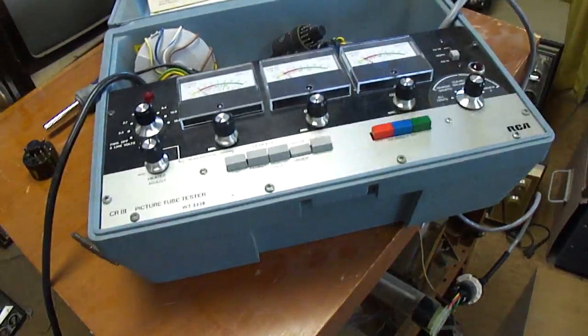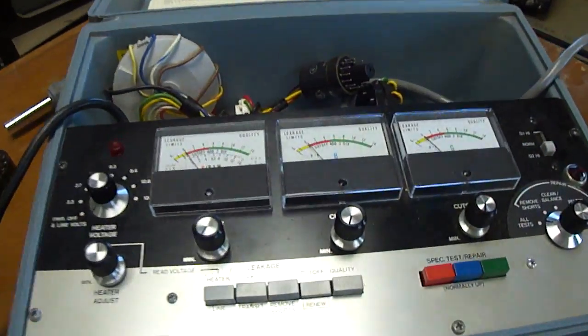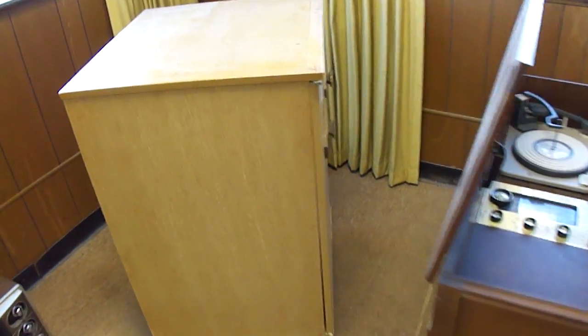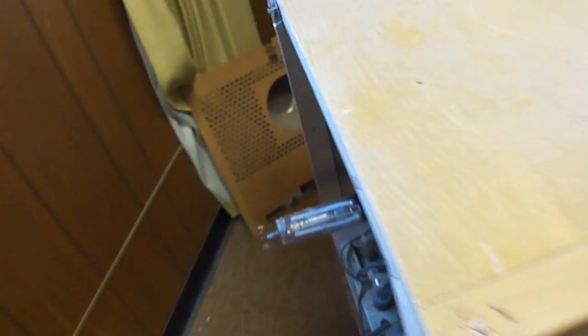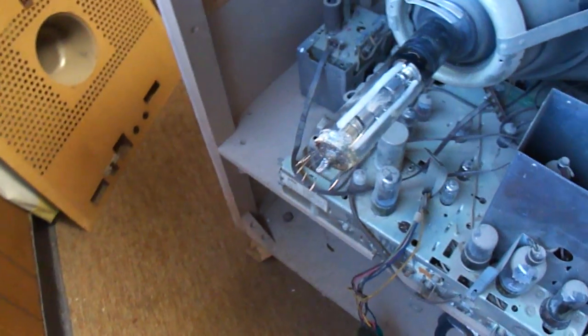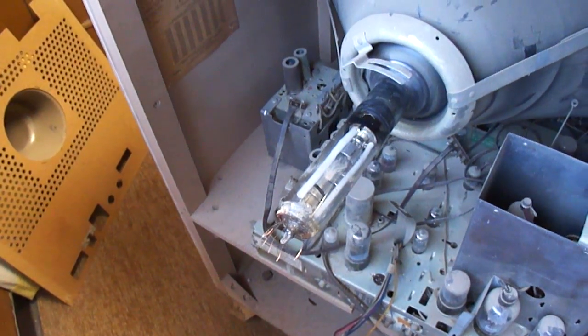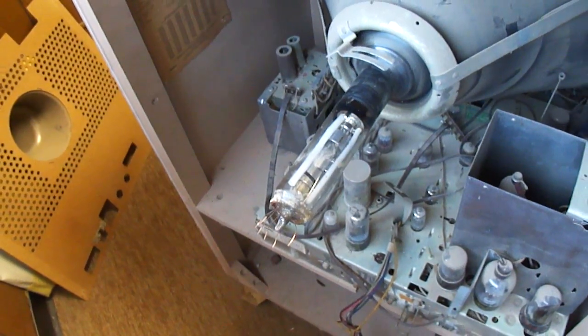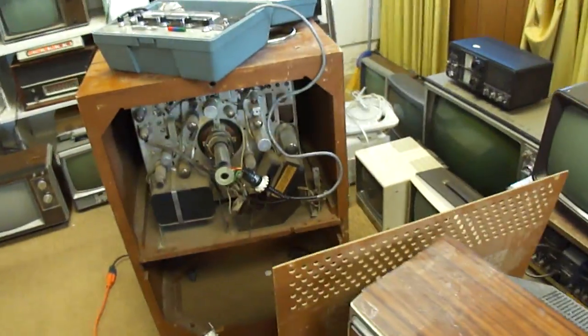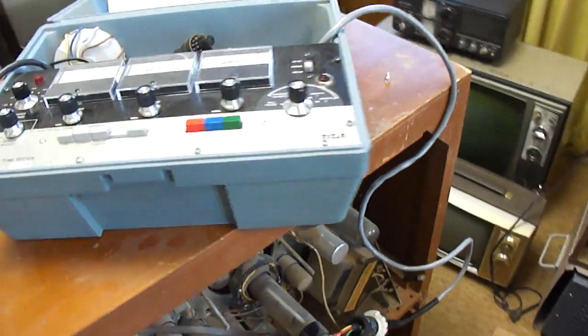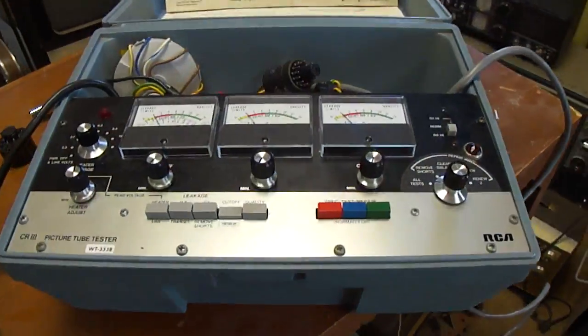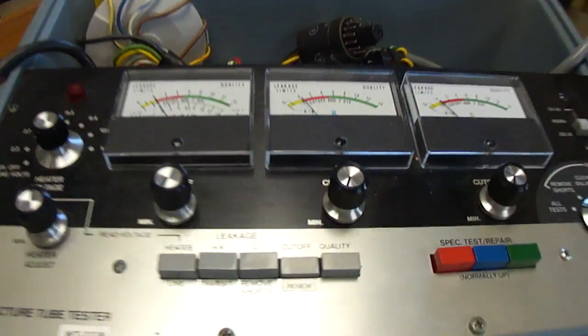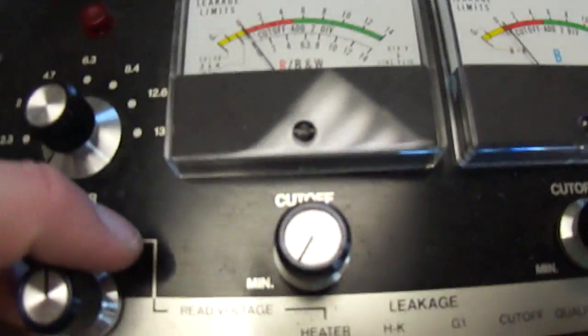What I wanted to do with this is to just double check my CRT tester. On this TV here, which is the Dumont, the CRT tested absolutely bad, 100% bad, no reading at all. And I thought that was kind of weird. So I thought I better double check my tester and make sure it can actually test a tube which probably has some emission on it. I'm going to check it out here.